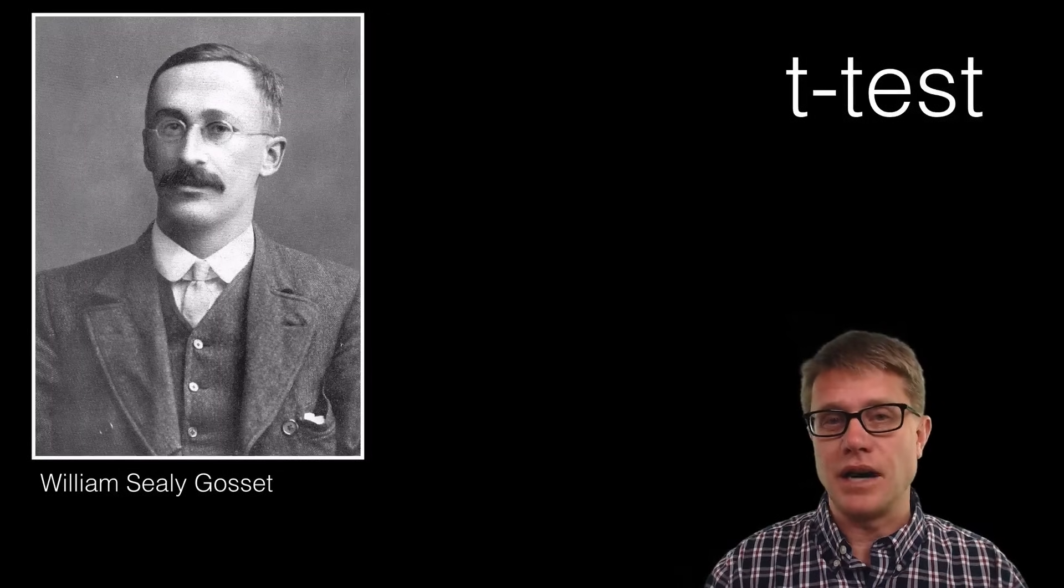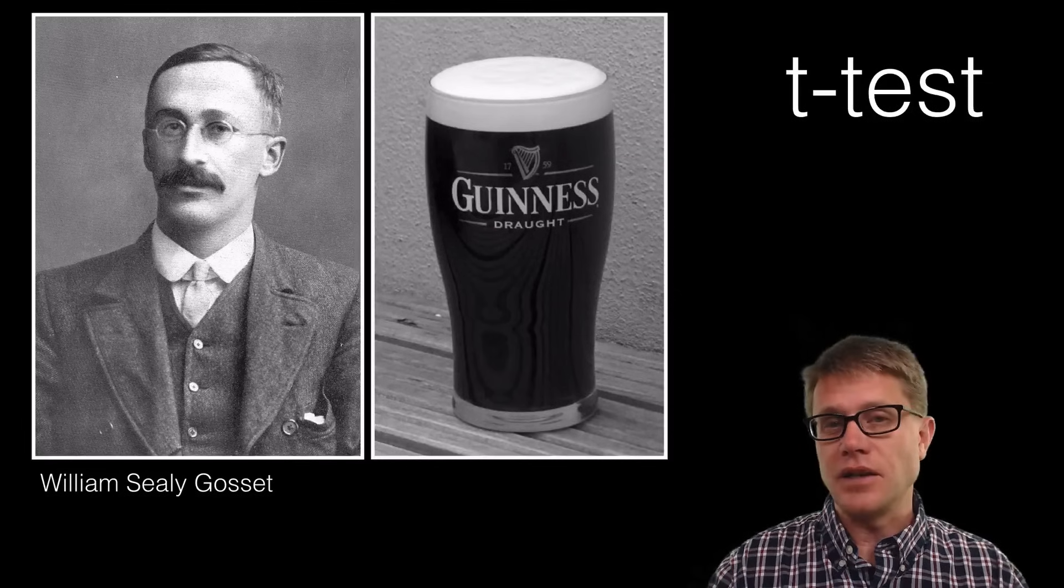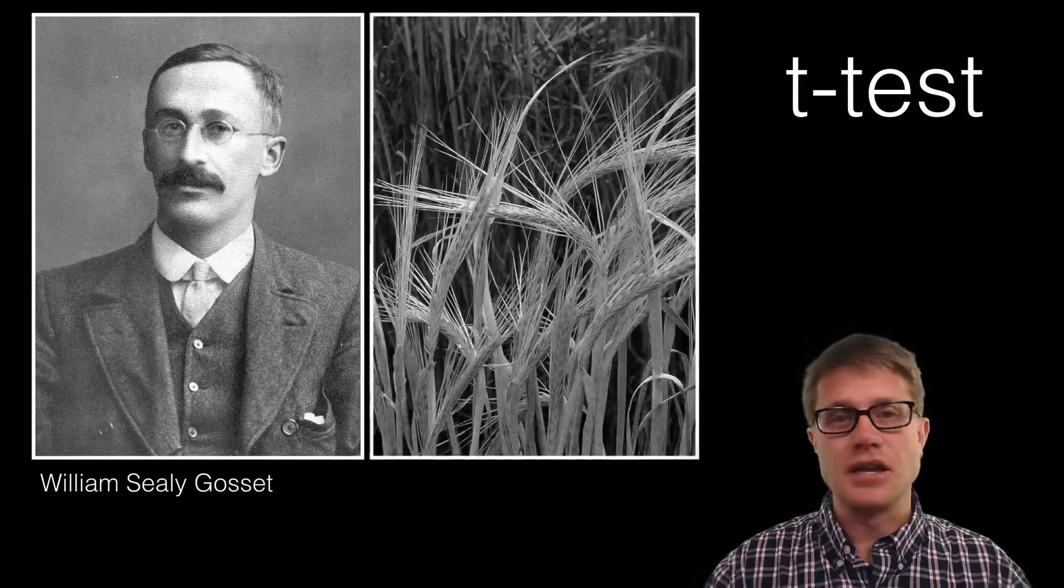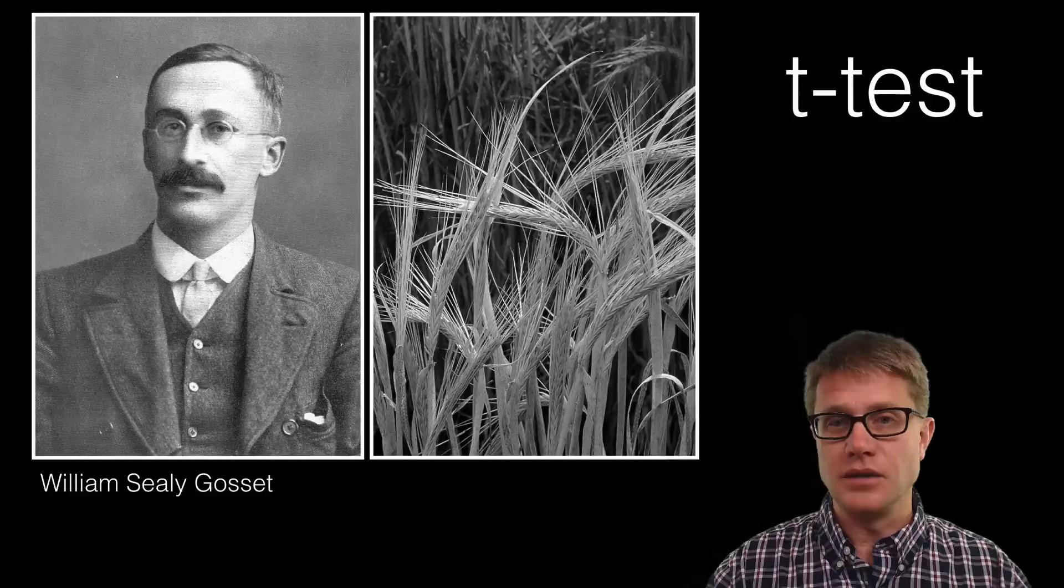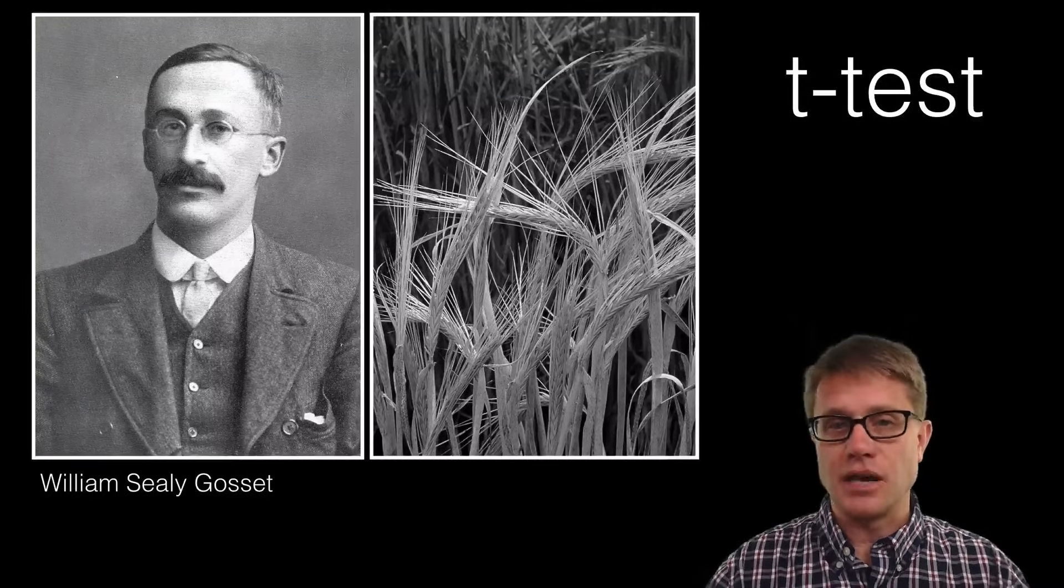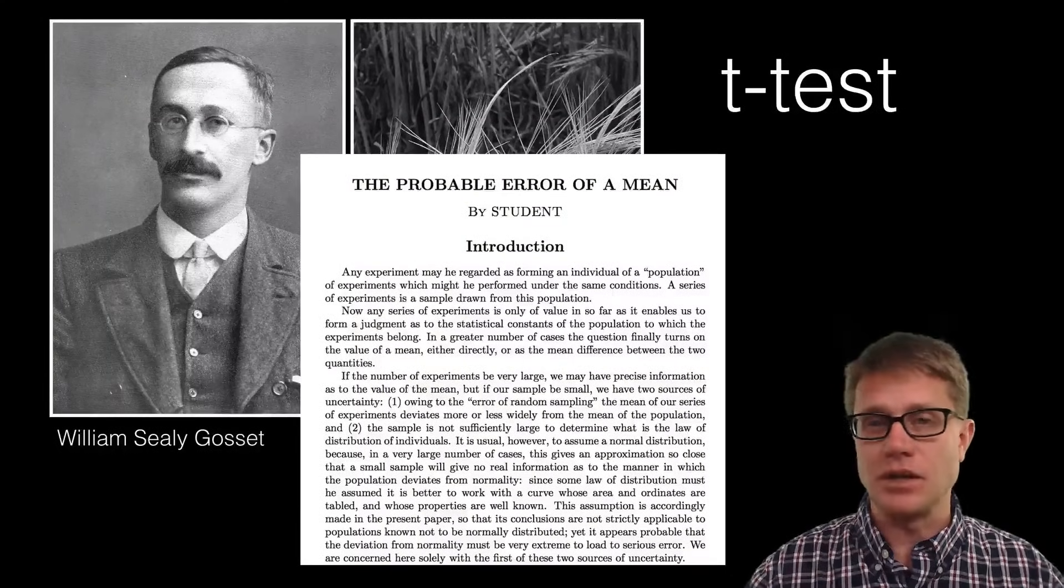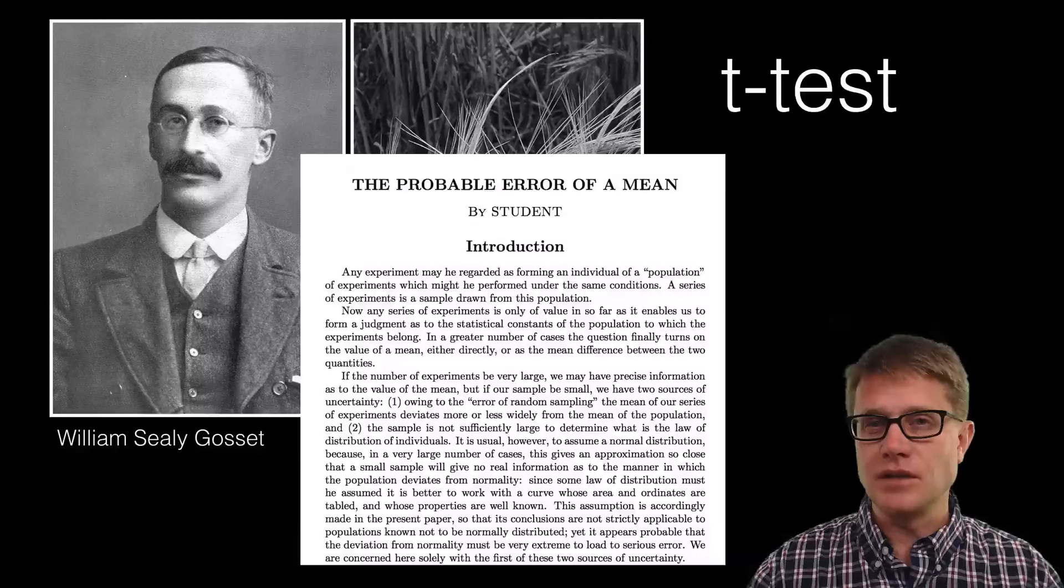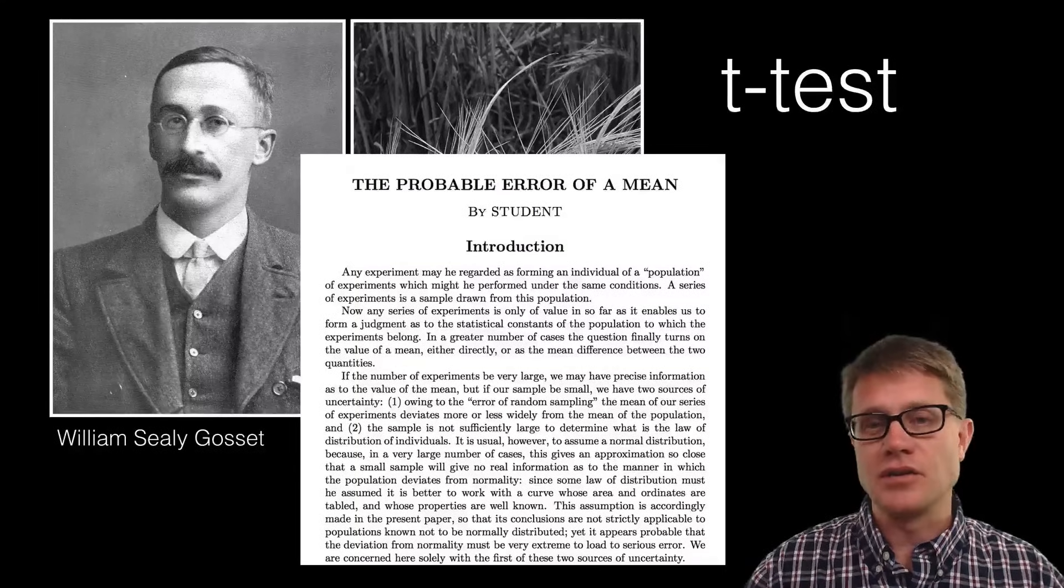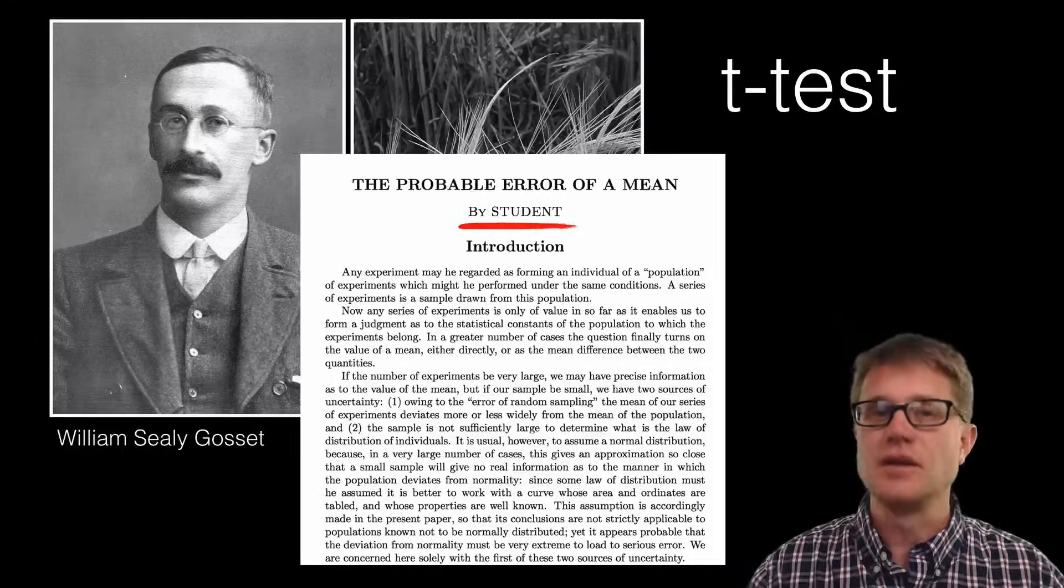The t-test was developed by William Seeley Gossett. He worked at the Guinness Brewery over 100 years ago and developed this test to determine things like the difference between barley yield. He wanted to publish this statistical test to share it with other statisticians, but the brewery was nervous. They didn't want him to give away any secrets. He finally convinced them, but he had to publish under the pseudonym student. So instead of this being known as Gossett's t-test, it is known as the student's t-test.